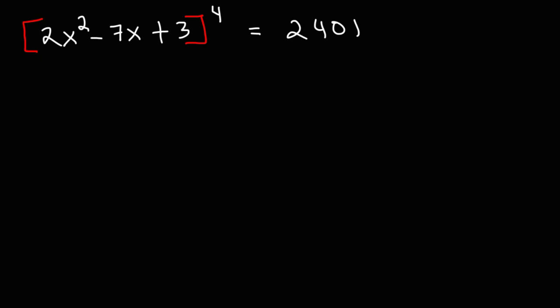So what do you think is the first thing that we need to do here? Our first step is we need to get rid of the exponent 4. So what we need to do is raise both sides to the fourth root, or you could raise it to the one-fourth power.